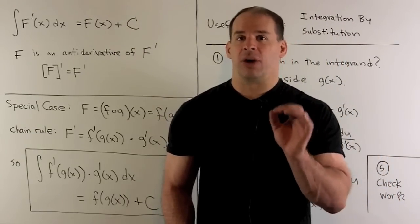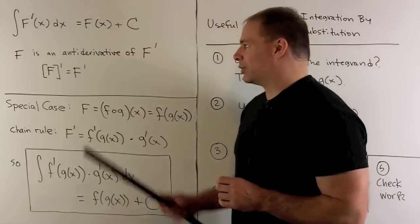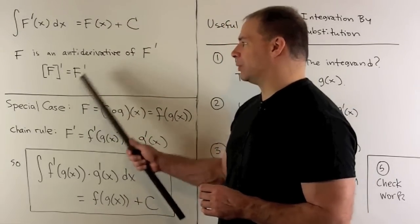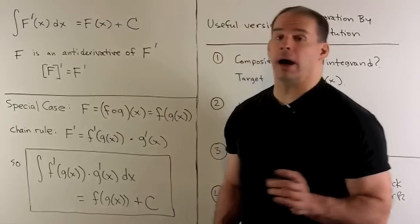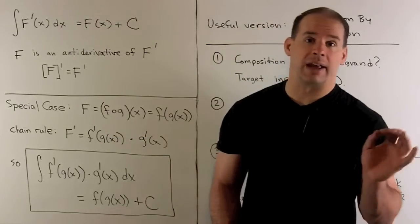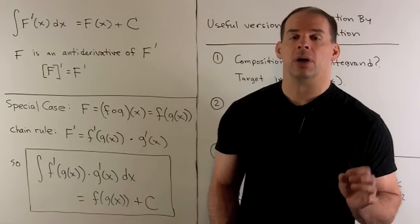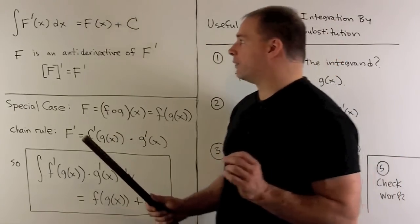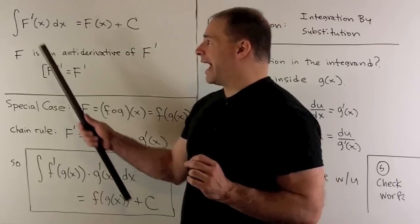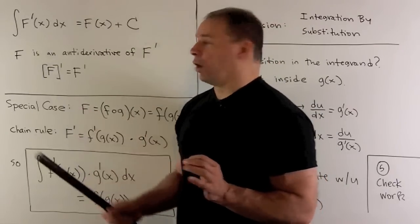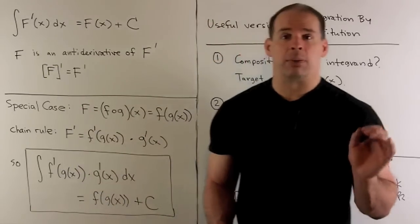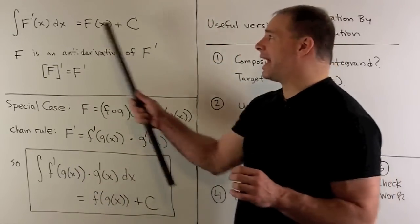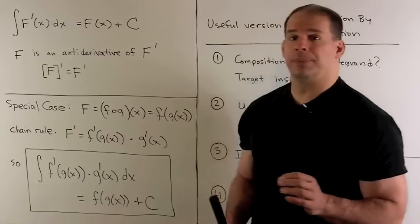To be an anti-derivative just says, if I take capital F prime, that's equal to capital F prime — not a lot of content there. We can rewrite that in integral form as the indefinite integral of capital F prime dx equals capital F plus a constant.